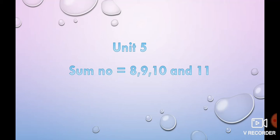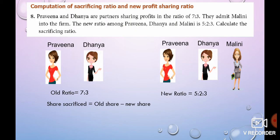Hi student. Unit 5, Sum No. 8, 9, 10 and 11. Now, Sum No. 8 — let's go to Sacrificing Ratio and New Profit Sharing Ratio.